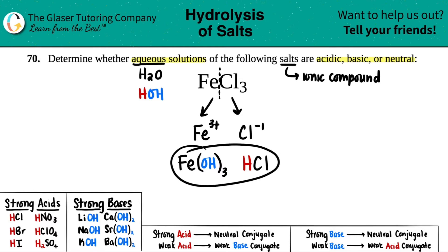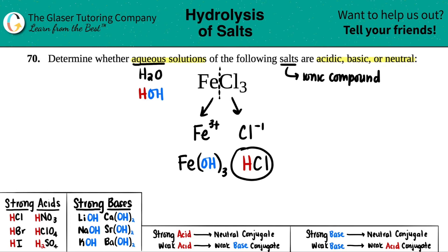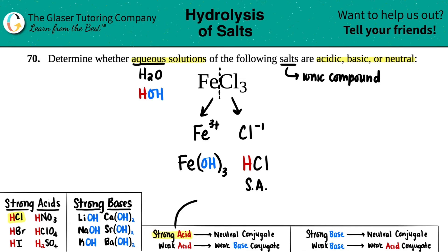Now we compare these to our knowledge of strong acids and strong bases. Starting with HCl — is it a strong acid or a strong base? It's a strong acid; it's right here on the list. So I'm going to label this as SA — strong acid.